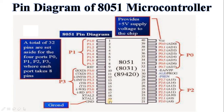Then pin number 20, that is the ground signal, VSS. This pin acts as the return path. Then pin number 40, that is VCC. This pin acts as the +5 volt power supply. So VSS is connected to ground and VCC is connected to +5 volt power supply.